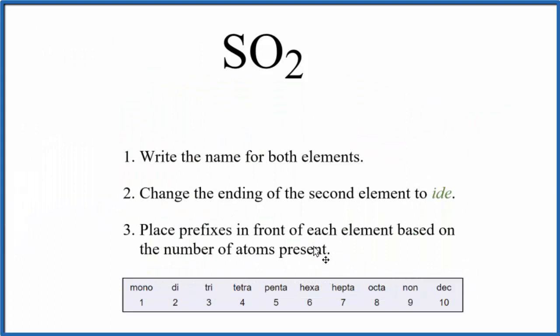And we need to think about these prefixes here when we write the name. So first, we'll write the name for both of the elements. We have sulfur and then oxygen.